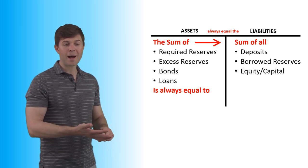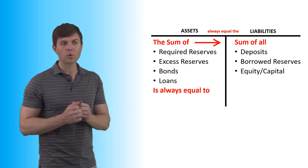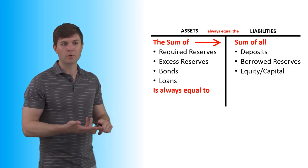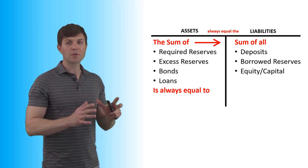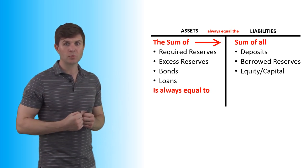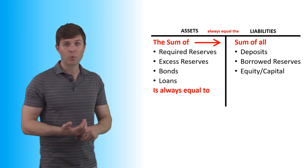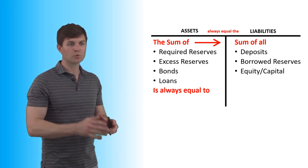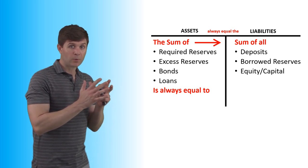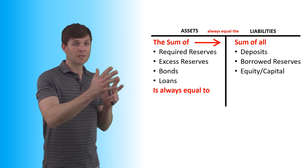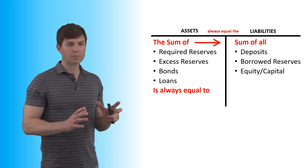What is always going to be true of these balance sheets is that the assets are always going to equal all the liabilities. So required reserves, excess reserves, bonds, and loans — the total of that side will always equal the total of the deposits, borrowed reserves, and equity. So you've got to make sure that what you do to one side you do to the other. Also keep in mind the reserve requirement: the percentage must always match those deposits. That's one of the keys to these types of questions.